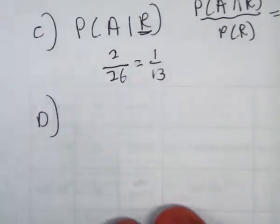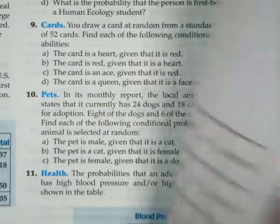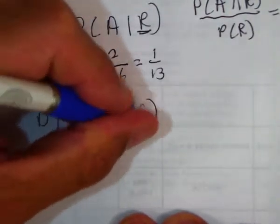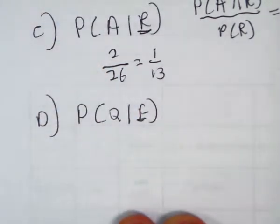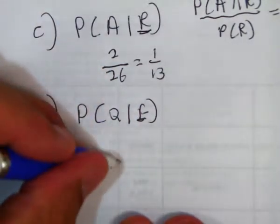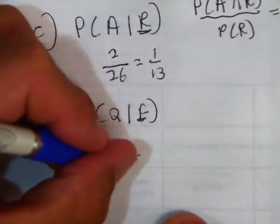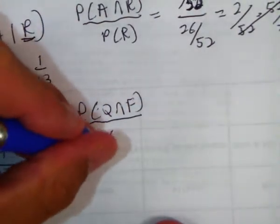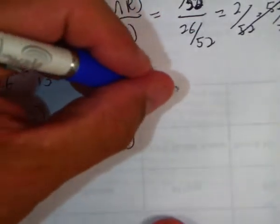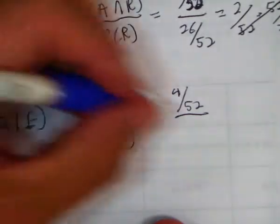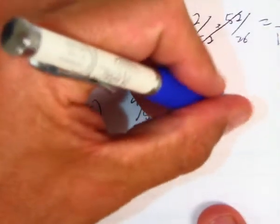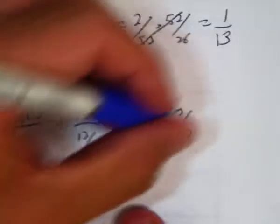And then D. The card is a queen given that it's a face card. The face cards are jacks, queens, and kings. So, probability of a queen given that it's a face card. How many face cards are there? Well, there's 4 jacks, 4 queens, 4 kings — so there's 12. And out of those, 4 of them are queens. So this is 1 third. Let's do it the rule way: probability of a queen and a face card over the probability of a face card. How many cards are queens and face cards? 4 out of 52. How many cards are face cards? 12 out of 52. You do keep, change, flip: 4 out of 52 times 52 over 12. You get 4 out of 12, which is 1 third.